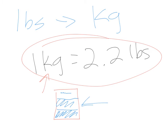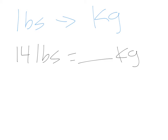For example, if I have a patient who weighs 14 pounds and I want to know what that is in kilograms, I take 14 and divide by 2.2. Using my calculator, 14 divided by 2.2 gives us 6.36. So 6.36 kilograms is what they weigh in kilograms rather than pounds.